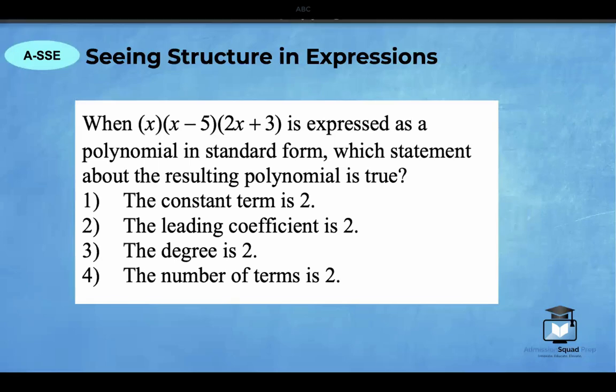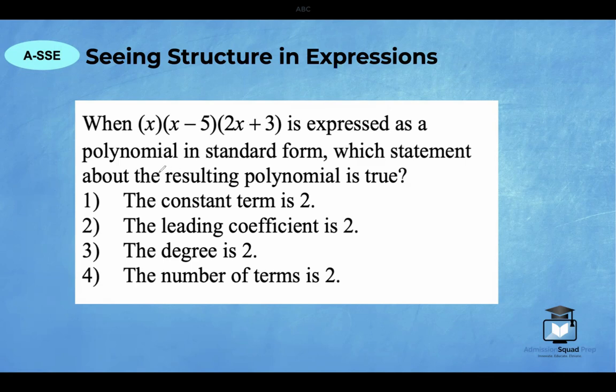The first category is called seeing structure in expressions. So I've chosen this problem to get you started. The problem states when x times (x minus 5) times (2x plus 3) is expressed as a polynomial in standard form, which statement about the resulting polynomial is true? I'm going to start by multiplying the expressions. The easiest place to start is to distribute x into (x minus 5). So I'm going to multiply x times x and then x times negative 5. So we're going to end up with x² minus 5x. I did this because I prefer to multiply a binomial by a binomial. It's just so much easier.